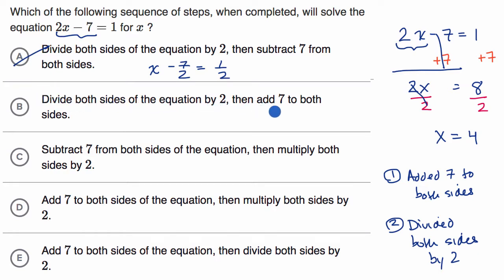Divide both sides of the equation by two, then add seven to both sides. So those are the two steps that we just did, but they're in reverse order, so we can rule that one out as well.